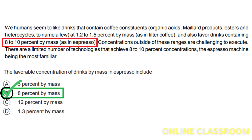The paragraph clearly mentions that humans favor drinks containing 8-10% by mass in espresso, so that concentration falls within the preferred range. Option C, 12% by mass, is incorrect — the paragraph does not mention a favorable concentration of 12%, and states concentrations outside 8-10% are challenging to execute. Option D, 1.3% by mass, is also incorrect; the paragraph mentions 1.2-1.5% by mass for filter coffee, not 1.3%.